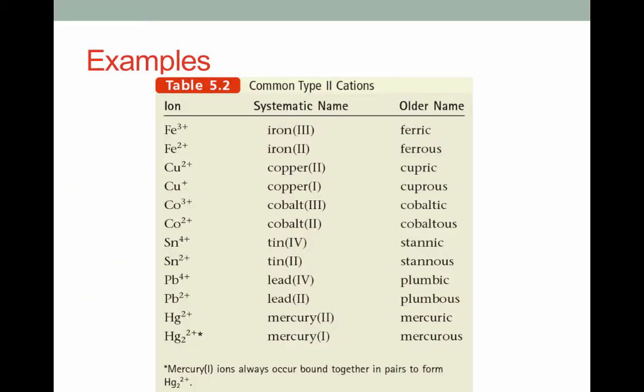Here's a list of some common transition metals that form ions with different charges. Iron, copper, cobalt, tin, lead, and mercury are the most common. In each case, notice the charge has been indicated by a set of Roman numerals. It used to be the case that each of these ions had its own name that had to be memorized. So you see that in the column on the right. Luckily, those names aren't used anymore. The Roman numeral system is much easier. So you can ignore the names on the far right.